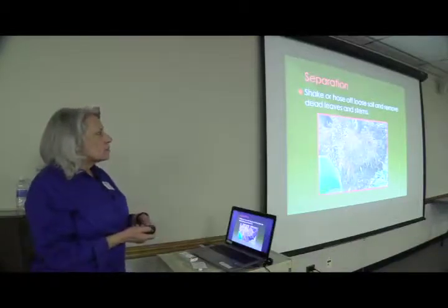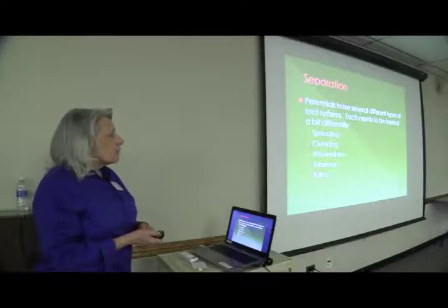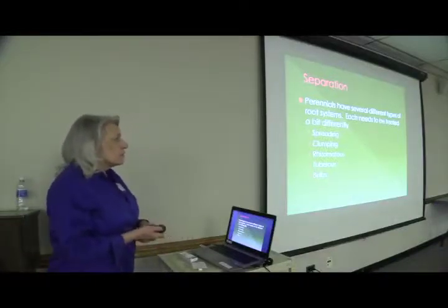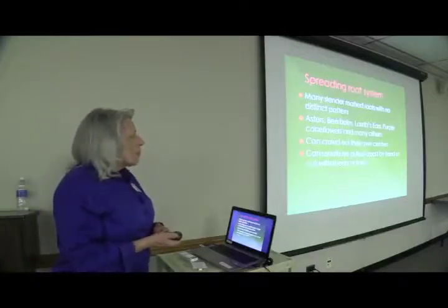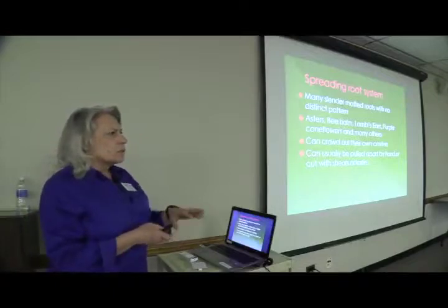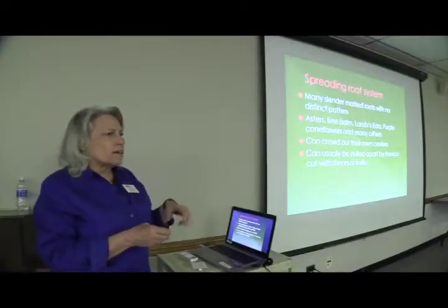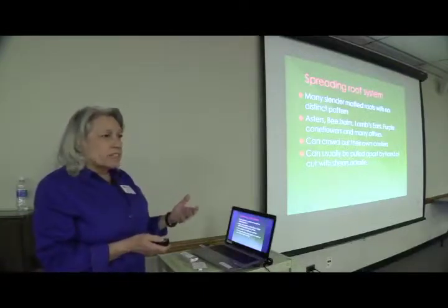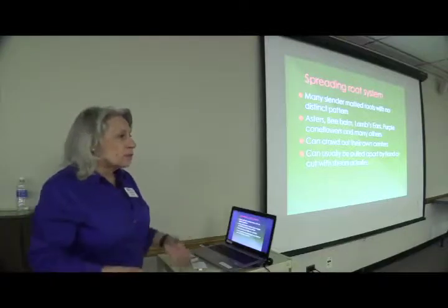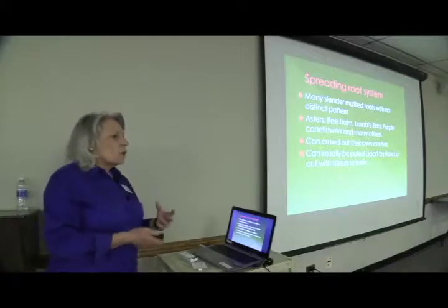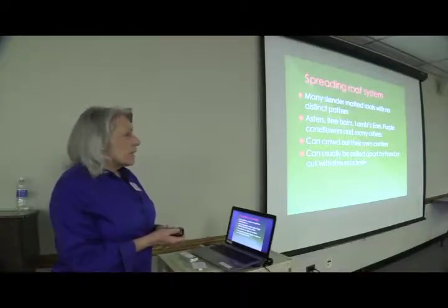Take off as much soil as possible from the roots and remove any dead leaves or stems. Perennials have several different types of root systems and each one needs to be treated a bit differently. The spreading root system has a lot of matted roots — you'll see this in lamb's ears, which crawl along the ground with shallow roots. These are good candidates for just taking off a piece and moving it somewhere else. For rejuvenating, dig up the whole thing and plant the outside parts, discarding the center. Asters are notorious for dying in the center. You can pull them apart by hand easily, or cut with shears or a knife.